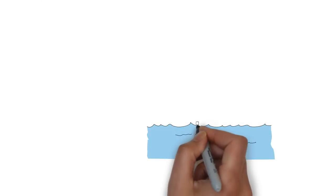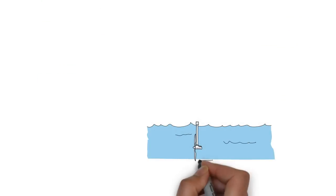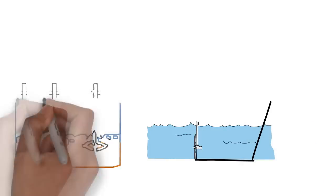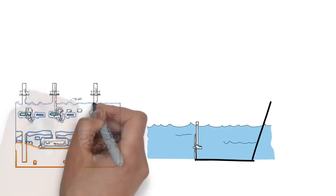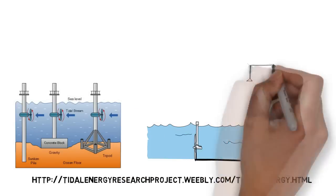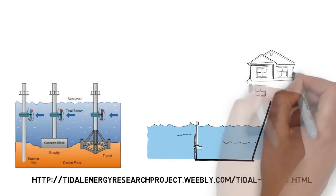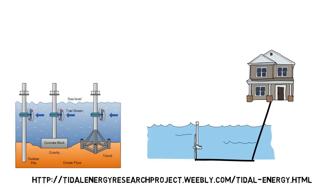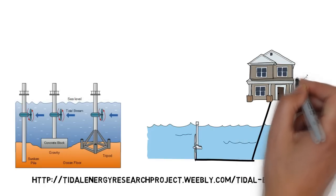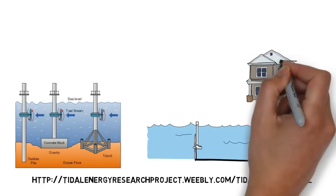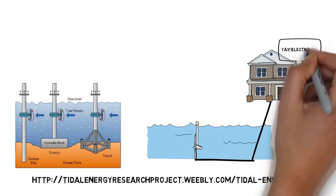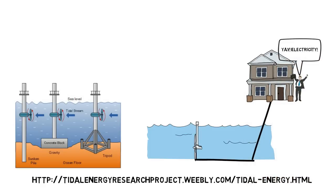Tidal streams work similar to wind turbines, but instead are underwater. Think of them as underwater windmills. The blades on the turbines get pushed by the tides causing the turbine blades to spin and the generator to convert the kinetic energy into electrical energy. The electricity is eventually transferred to electrical transmission lines and transferred to houses and buildings where people use it to power electrical devices in their homes.